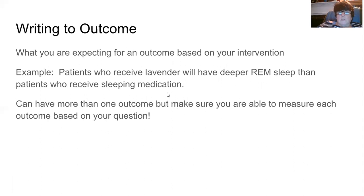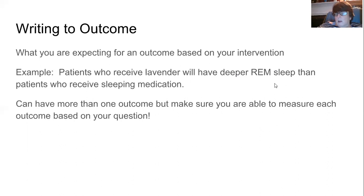When writing an outcome, very similar to when you write your SMART goals, you want to make sure it's something measurable. For example: 'patients who receive lavender will have deeper REM sleep than patients who receive sleeping medication.' I can measure what REM sleep looks like and monitor it for patients who get lavender versus a sleep medication. So that's a doable outcome.